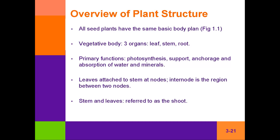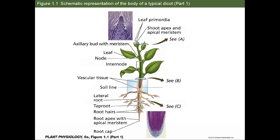Leaves attach themselves to a stem at what we call nodes, and the internode region — a term which gets used a lot, especially in viticulture — is that region between two nodes. Combining a stem and a leaf is referred to as a shoot. Here we have a schematic of a typical dicotyledonous plant.